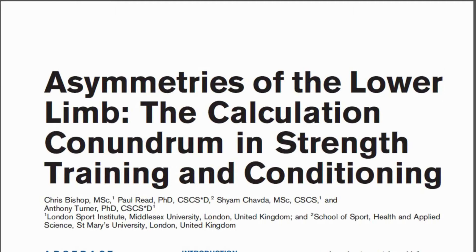A little bit of background on this article: it came about last summer whilst I was going through the literature review process for my PhD, which is on asymmetries. I was trolling through article after article, and whilst collating my notes for all these different articles, I noticed quite a lot of different variations in how asymmetries were being calculated.